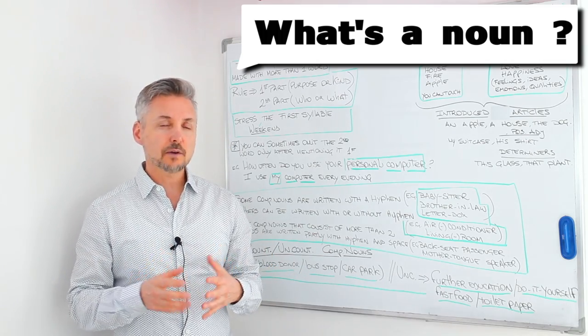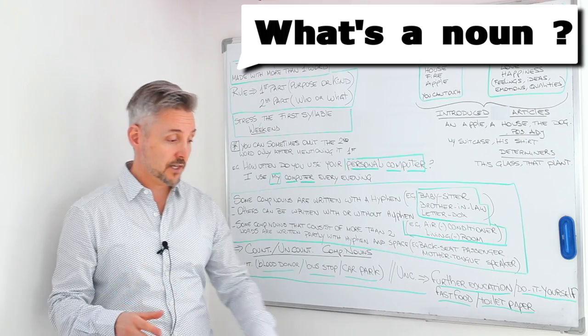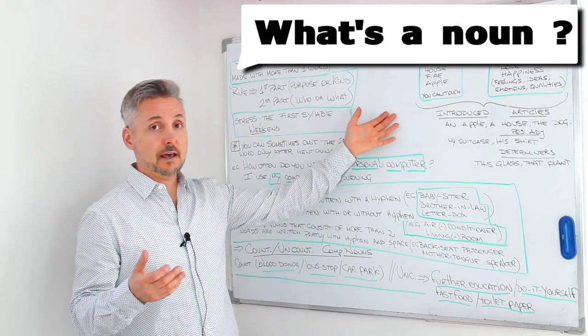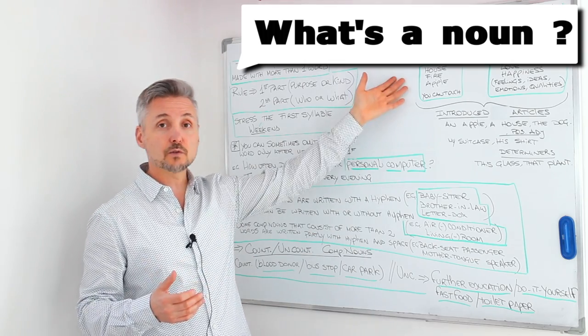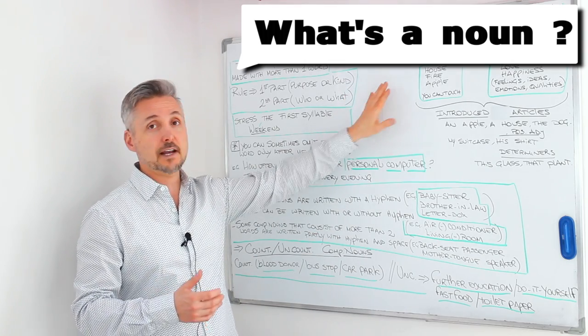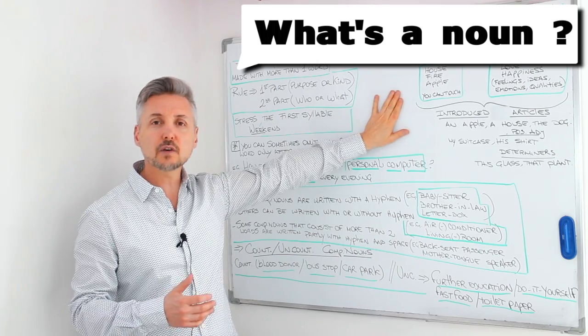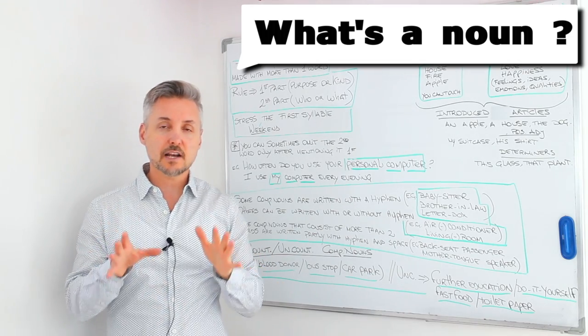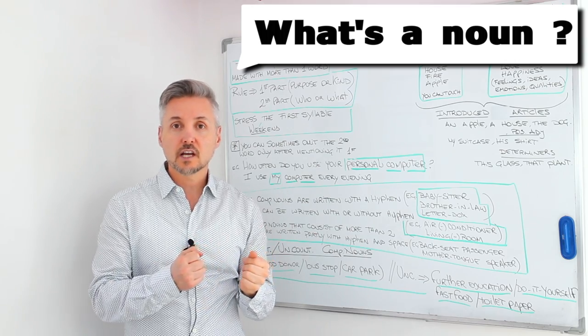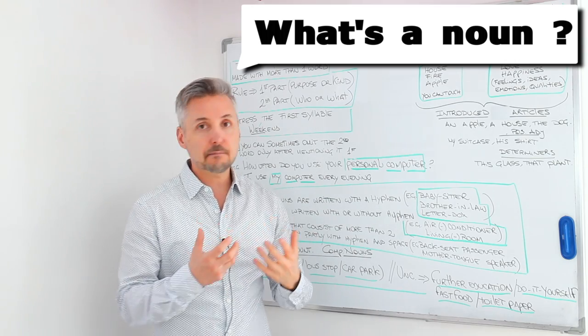A concrete noun is something that you can touch. For example, a table, a whiteboard, a house, a fire, an apple, things that you can touch. An abstract noun is, for example, nature, love, happiness.